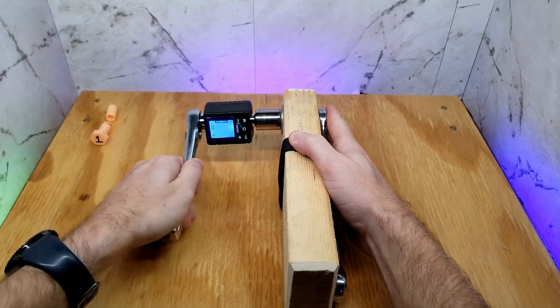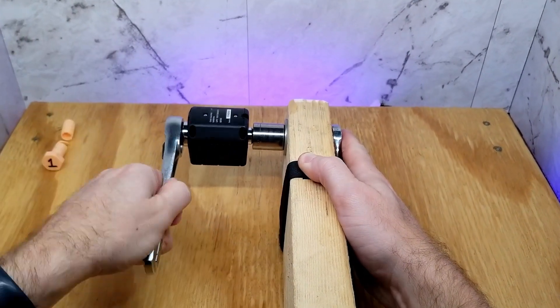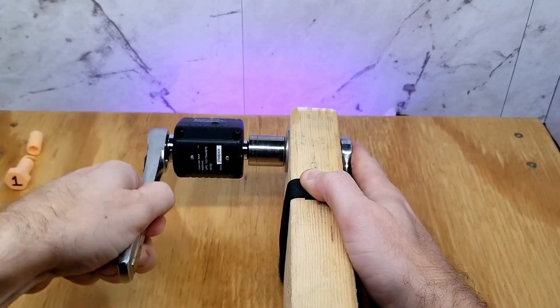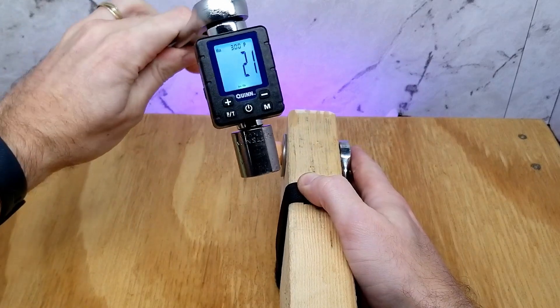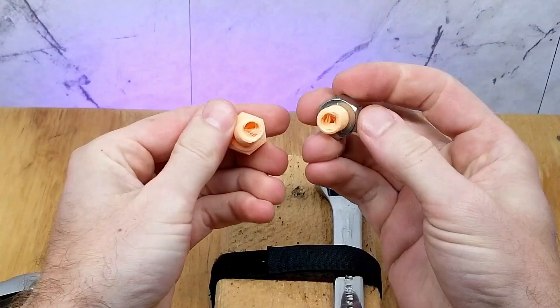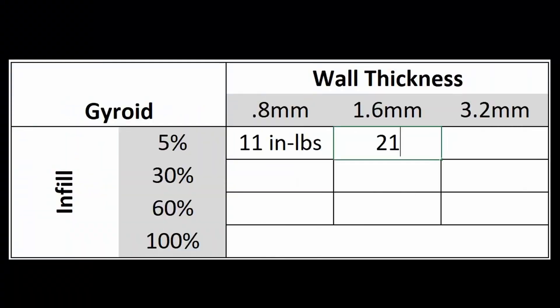If I had one complaint about this torque adapter, it's that the display has a tendency of rotating out of view during use. But this one broke at 21 inch pounds, which is really less than half of what the torque adapter's starting range was. But at this time I have no reason not to believe it's any less accurate here. Let's get it recorded in the chart as 21 inch pounds.